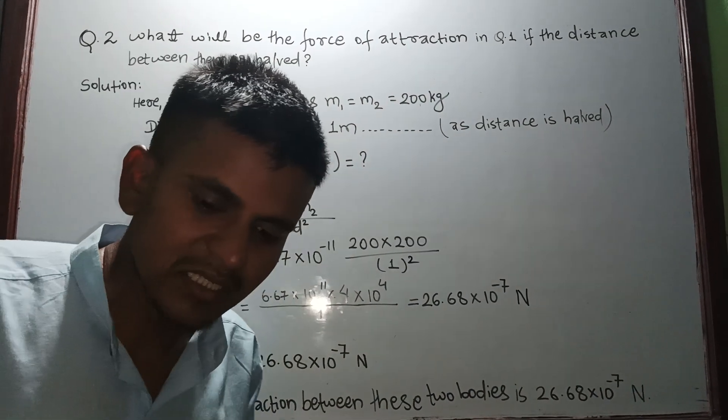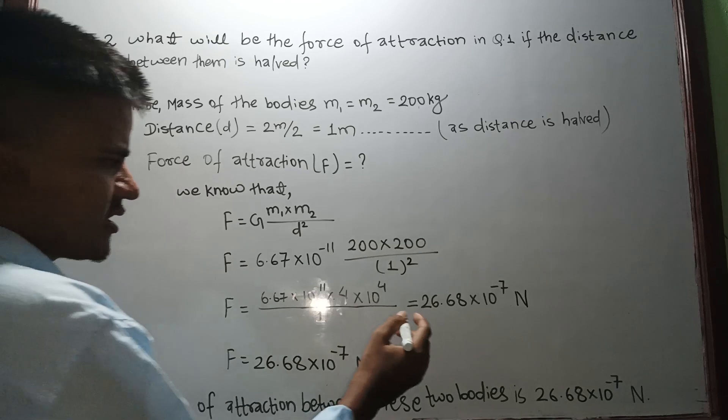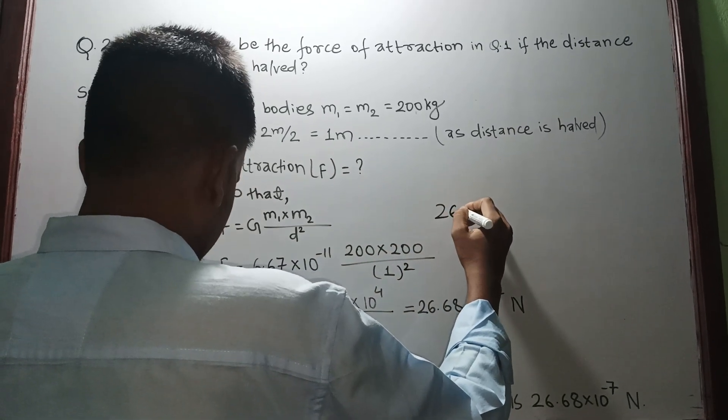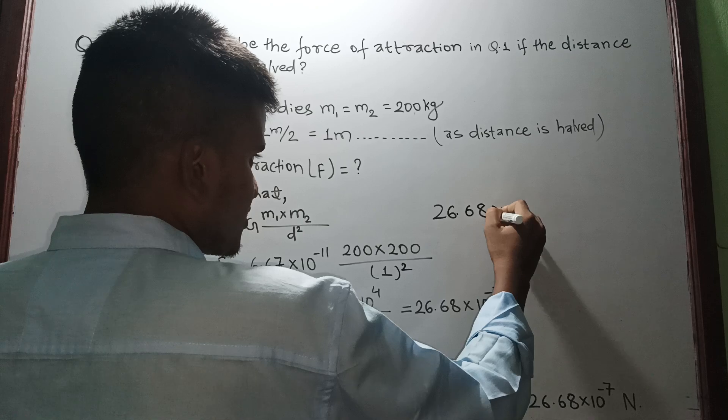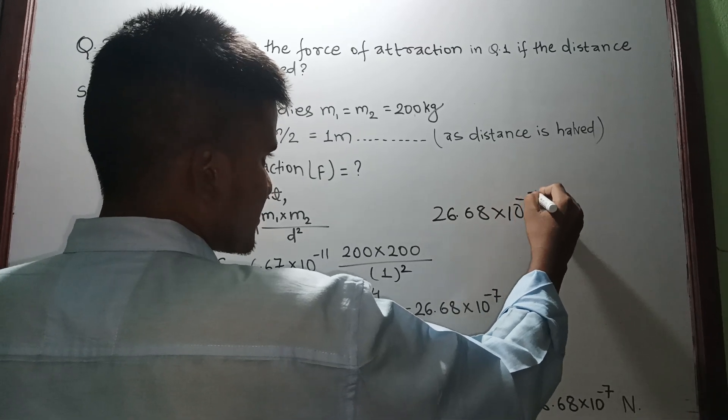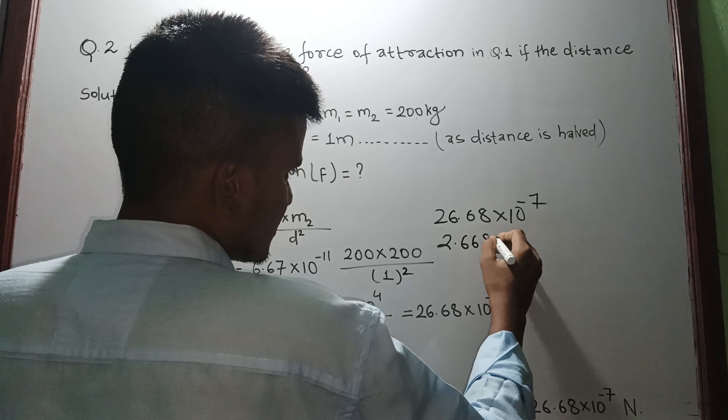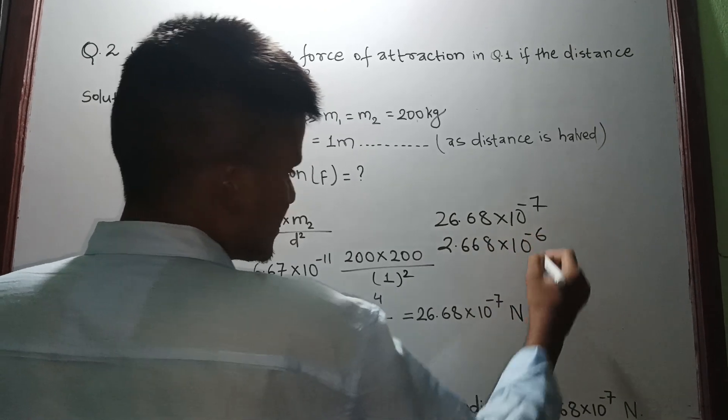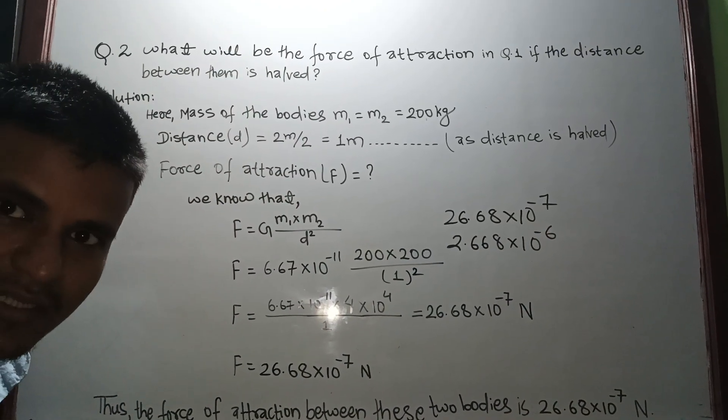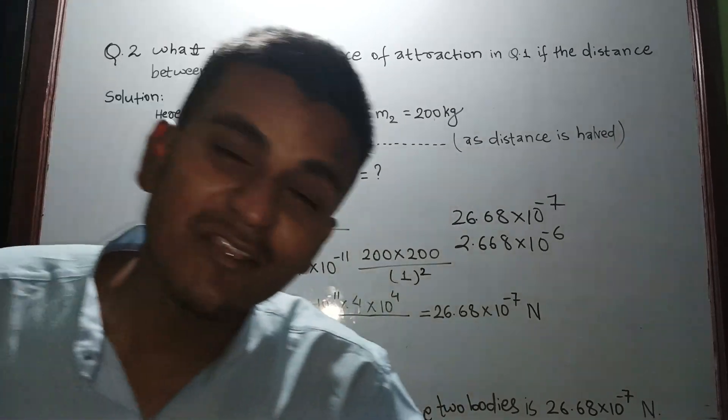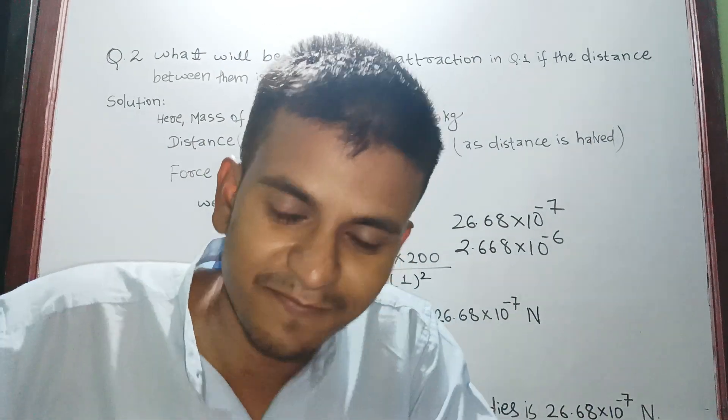Now see here, the answer is 26.68 × 10⁻⁷.